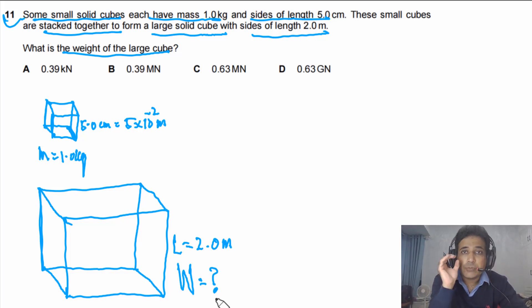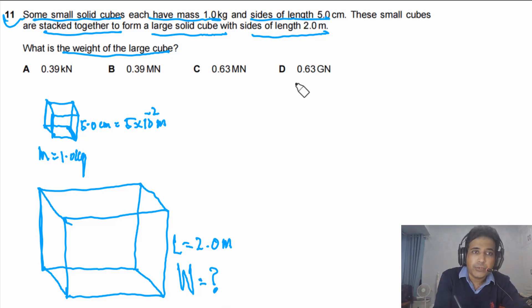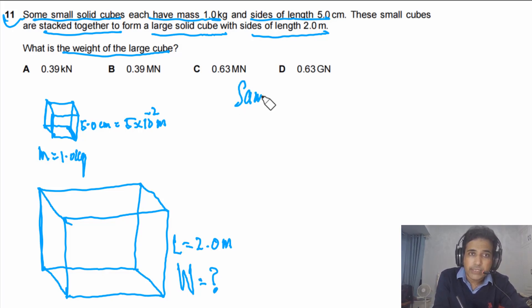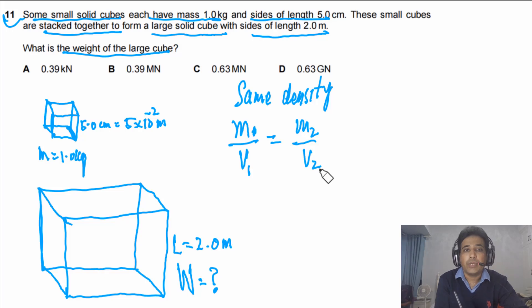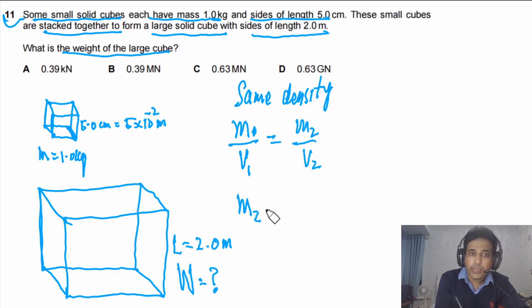Since the cubes are made of the same material, they have the same density. Using the concept that density is the same, we can write: m₁/V₁ = m₂/V₂, where m₁ and V₁ are the mass and volume of the small cube, and m₂ and V₂ are those of the large cube.